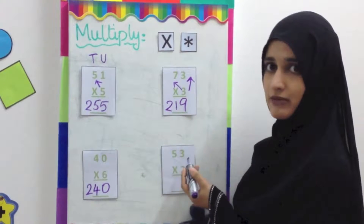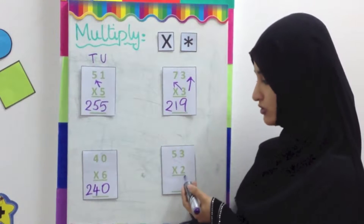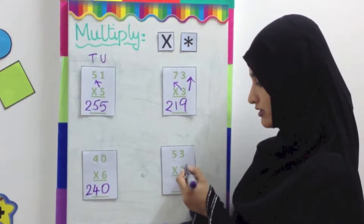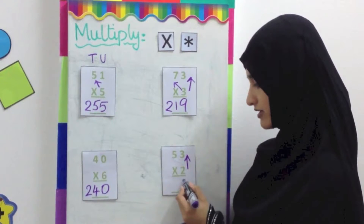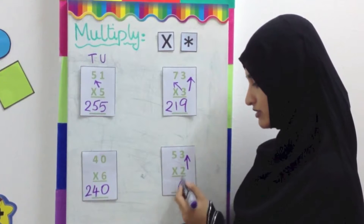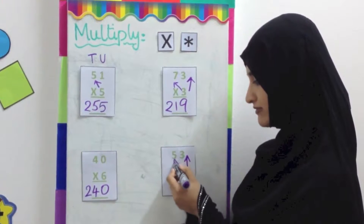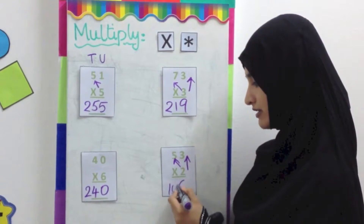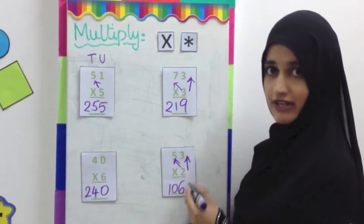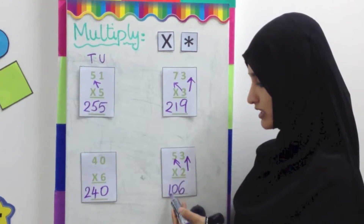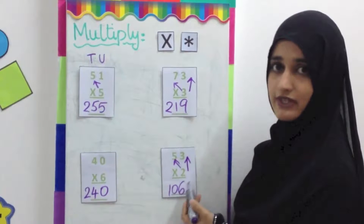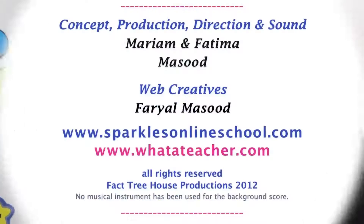53 multiplied by 2. 2 threes are 6. 2 fives are 10. We write the answer straight away. So the answer is 106.